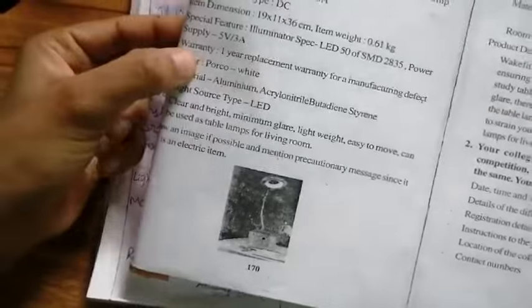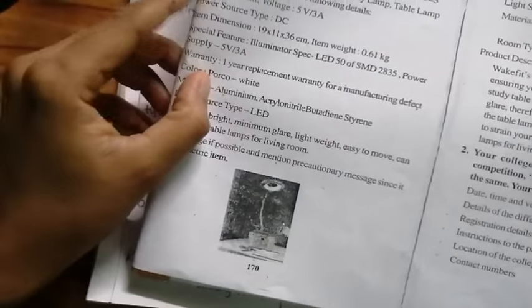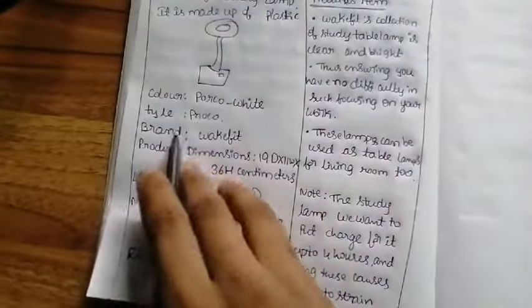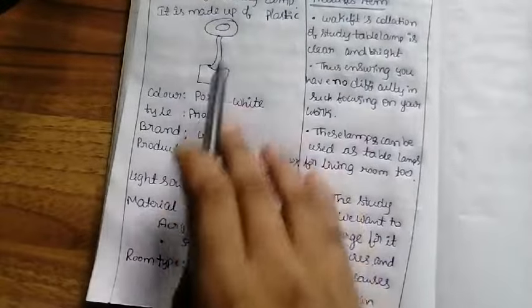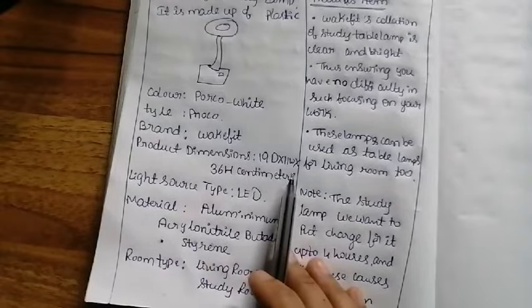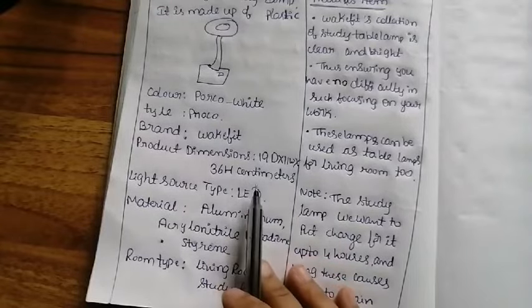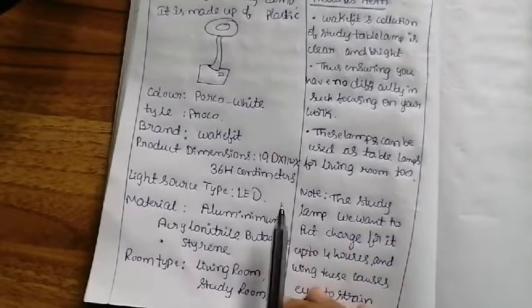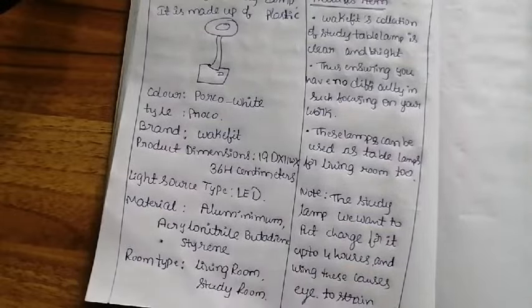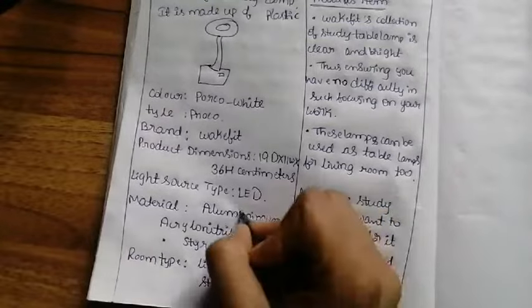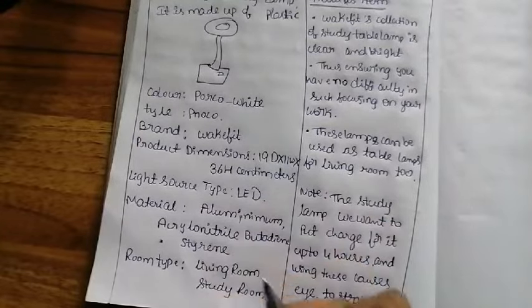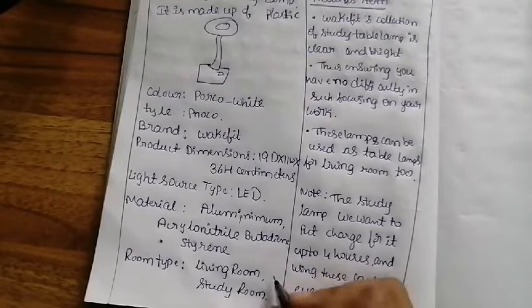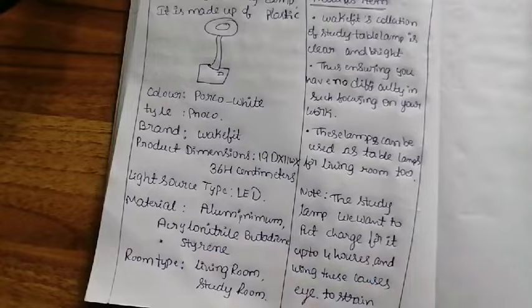The features include: color, warranty, power sources, voltage, dimensions, light sources type, brand is Oakfit, product dimensions are 19D x 11W x 36H cm. Light source type is LED. Material is aluminum and plastic rubber styrene. Room type is living room or study room where you can use it.